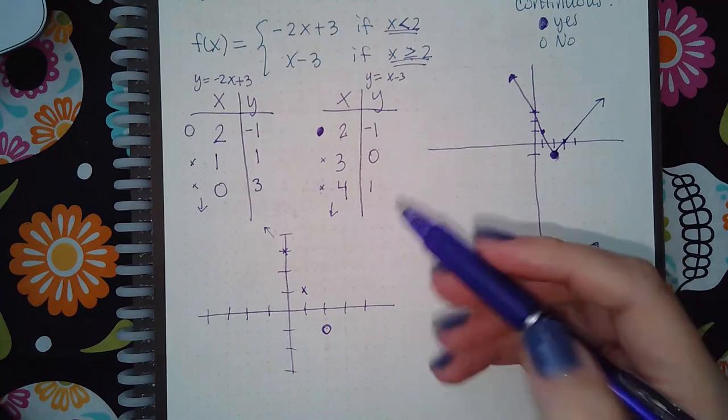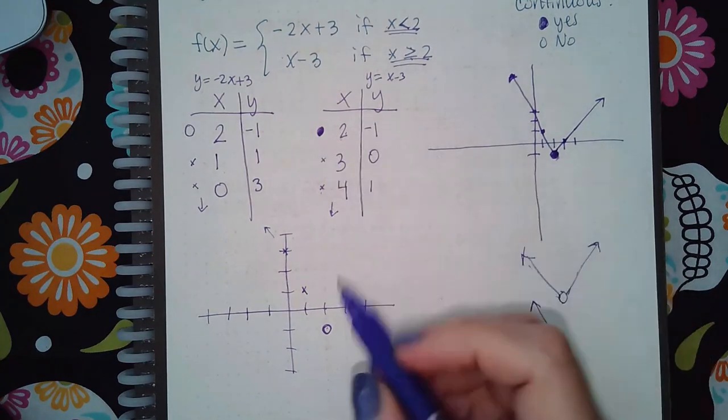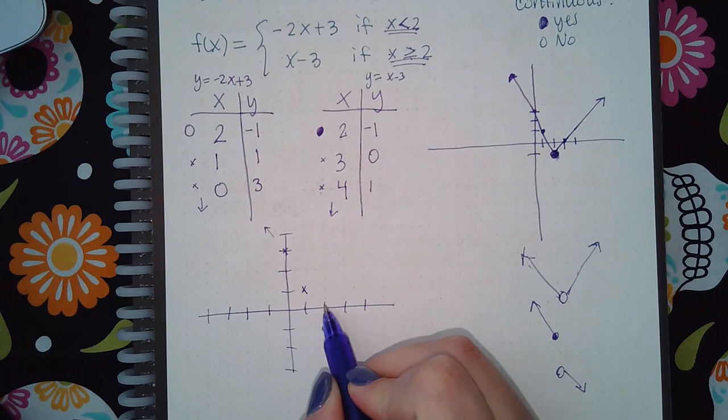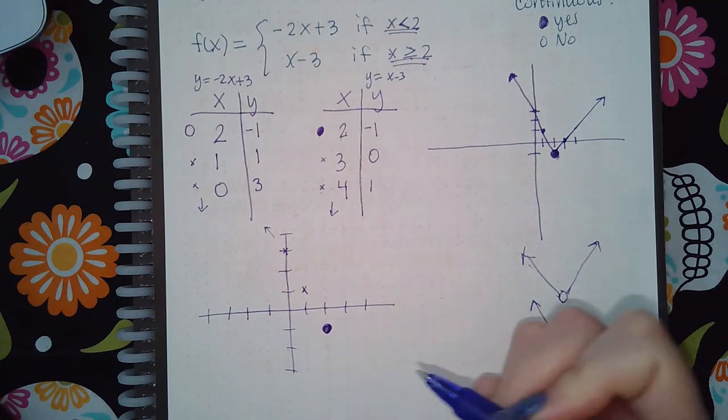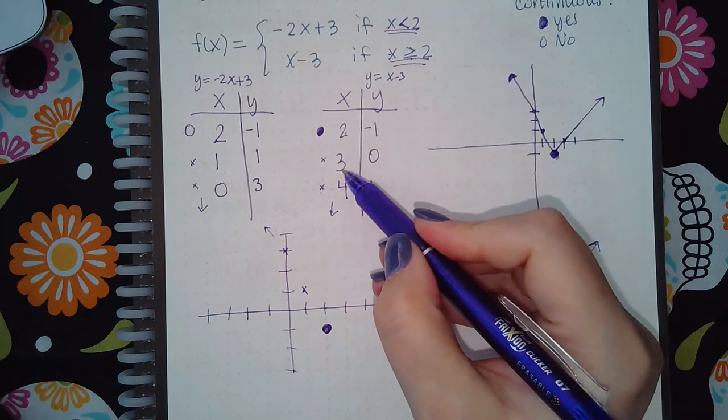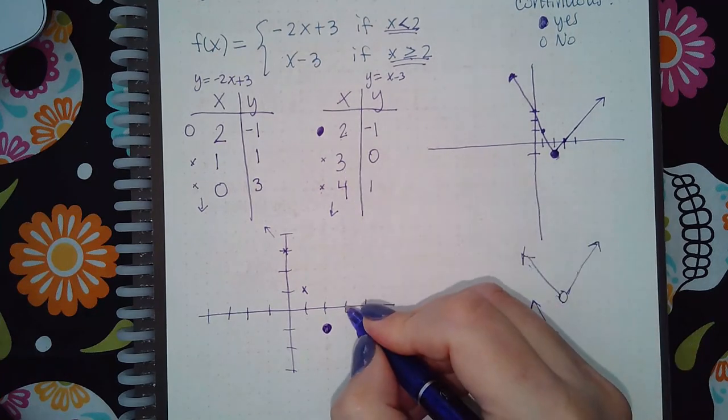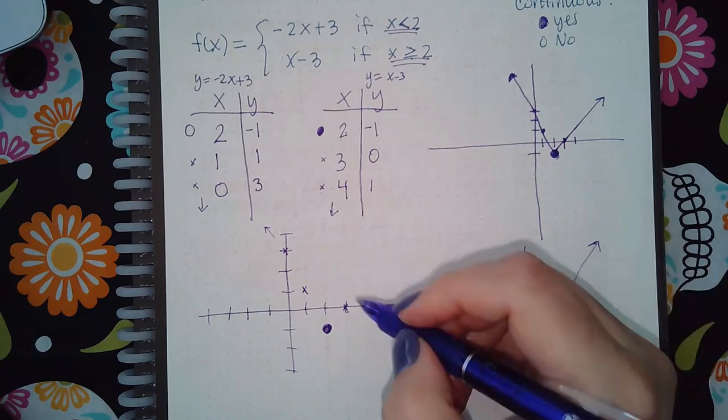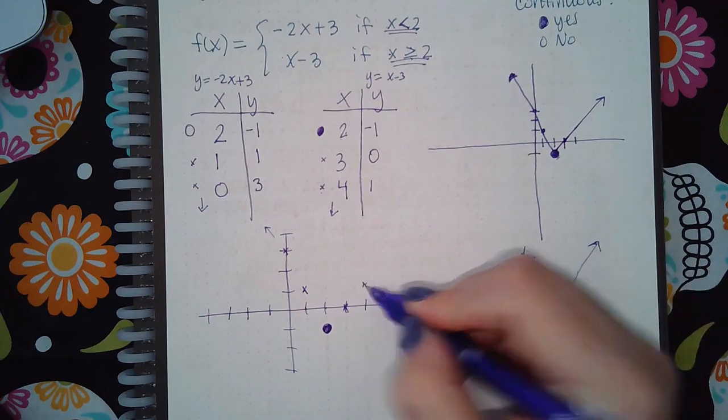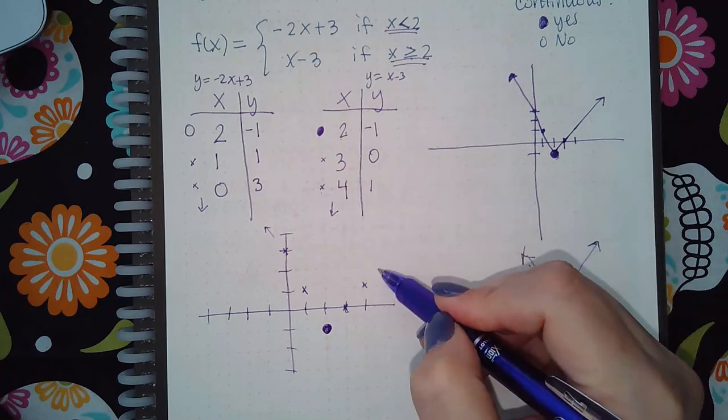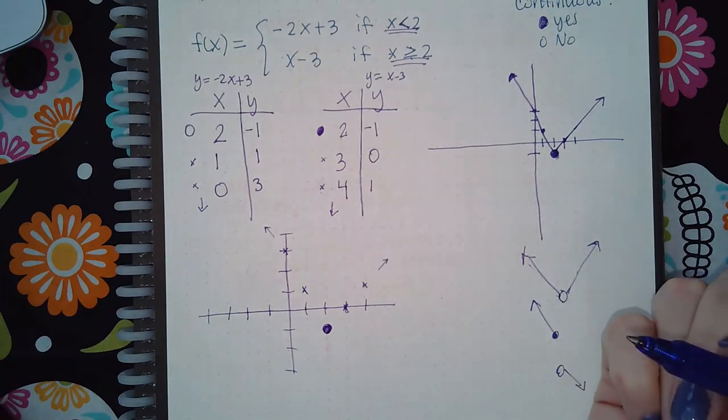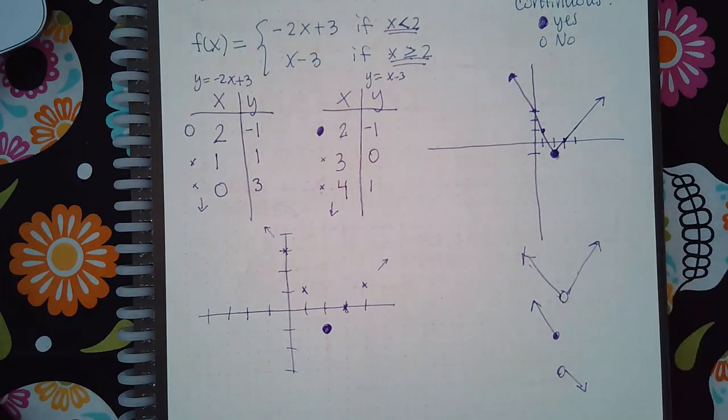Now I'm gonna go to this table and plot these points. So 2 and negative 1, which happens to be the same spot, so the solid dot will fill the hole. 3 and 0, so mark a regular point there, and then 4 and 1, mark a regular point there. Now it does have to go forever in that direction, so eventually I want to have an arrow over here.